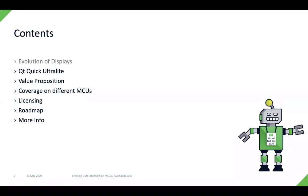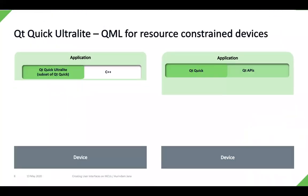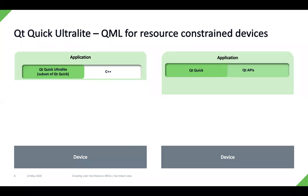Let's take a look at what Qt Quick Ultralight can do in this market of 32-bit microcontrollers. Qt Quick Ultralight is basically what we describe as QML for resource-constrained devices. If you are familiar with Qt and Qt Quick — shown on the right-hand side of this slide — you write your application's user interface in Qt Quick and use Qt APIs for the backend implementation. In the case of Qt Quick Ultralight, you again use QML for the UI part, but instead of Qt APIs, you use standard C++.